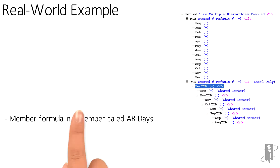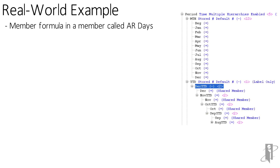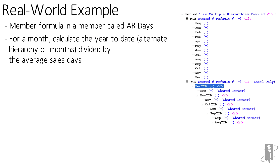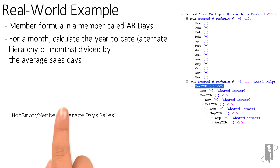What I wanted to do is have a formula in a member called AR days. The calculation for this is: for a month, we want to calculate the year-to-date member in the alternate hierarchy of months, and divide that by the average sales days. So what does my query look like?